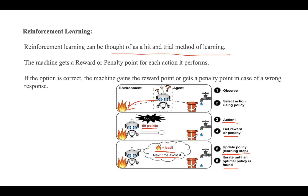In this way, the agent learns through a hit-and-trial process and based on experience learns to perform the task in a better way. Reinforcement learning is a type of machine learning method where a computer program or agent interacts with the environment and learns to act within it.